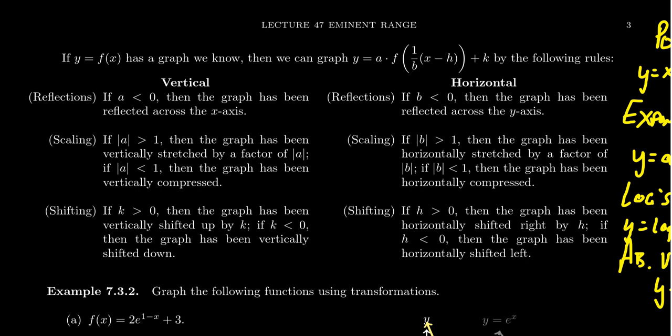The last type of transformation is shifting. To shift things up and down, you add something external to the function. Adding k moves up; subtracting k moves down. If you subtract something internal to the function in the horizontal zone, this has the opposite effect — subtraction actually moves in the positive direction, which we call right, and adding moves in the negative horizontal direction, which we call left. That's how shifts work.